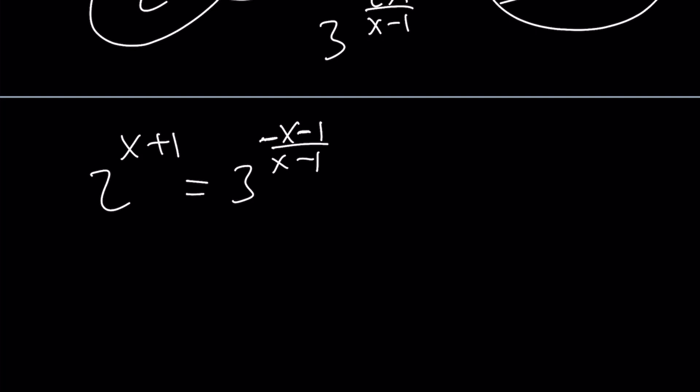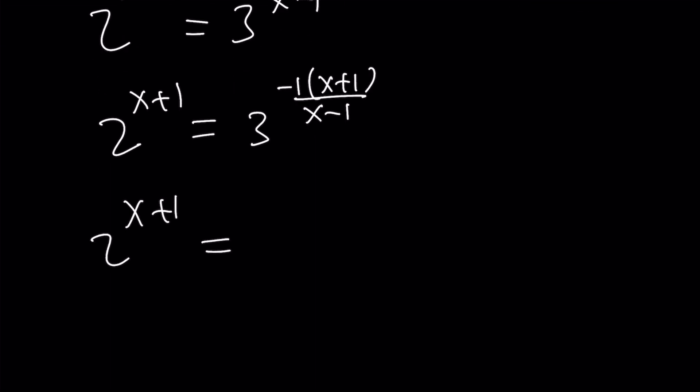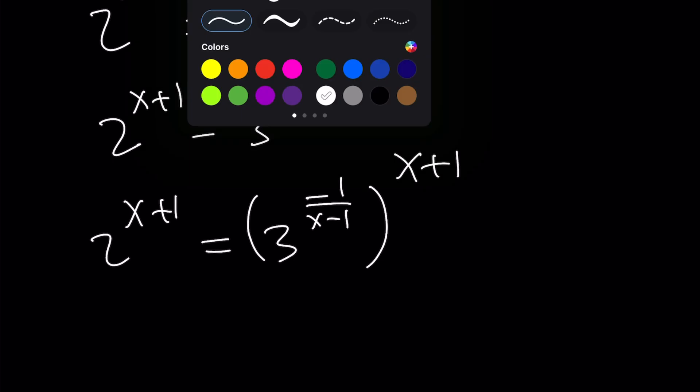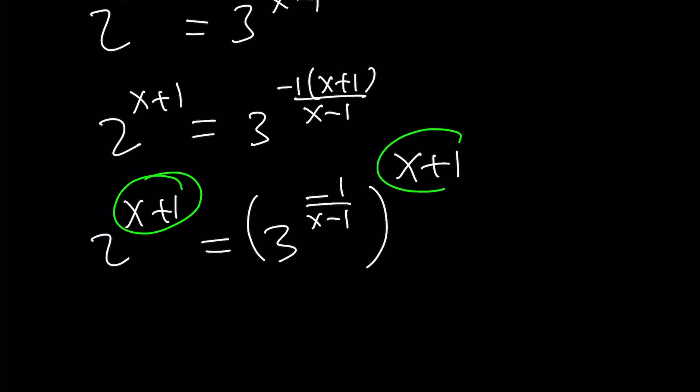Here's what we're going to do next. This part is very important. We're going to take out a negative here. So we're going to write this as 2 to the power x minus x plus 1. And then 3 to the power negative 1 times x plus 1 over x minus 1. And then we're going to go ahead and write this as 3 to the power negative 1 over x minus 1 to the power x plus 1. And this is the most critical part of this. Notice that we have x plus 1. So if both exponents are 0, we're good. x plus 1 equals 0 implies x equals negative 1. That's one of the solutions.